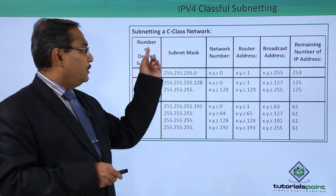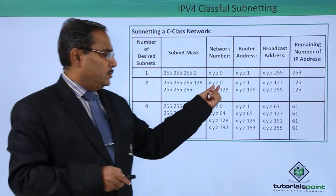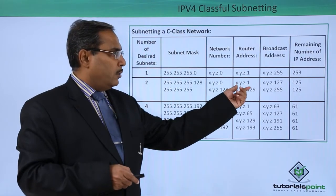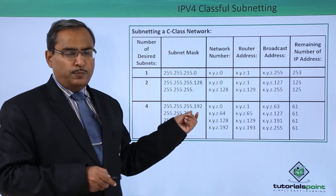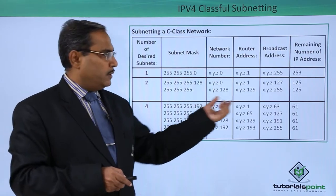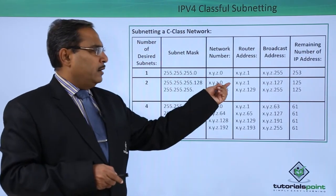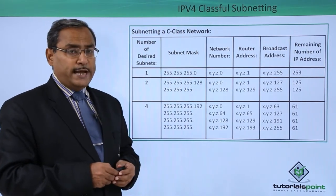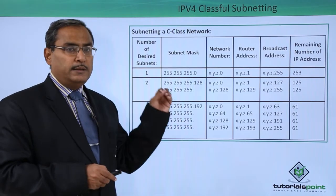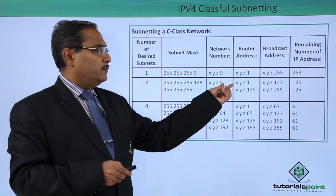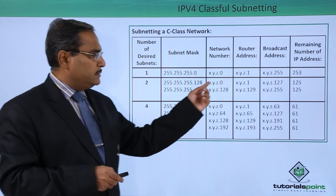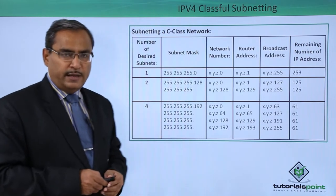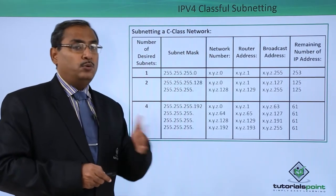We are having 2 subnets here. For subnet 0, where the first bit is 0, the address starts at x.y.z.0. The next address is the network/router address and the highest combination of 7 bits all set to 1 gives 127, which is the broadcast address. With 7 bits yielding 128 combinations and 3 reserved, we are left with 125 usable addresses for subnet 0.